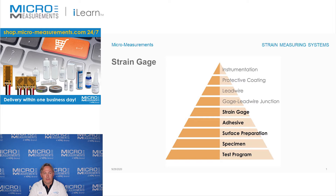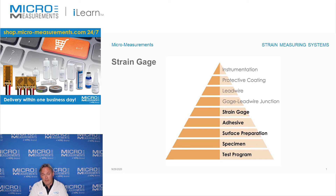Hi, my name is Terrell Peterson and I'm the manager of the applications engineering department here at Micromeasurements. Today I'd like to take you through part of the pyramid approach to selecting strain gauges. Tom Rummage in a previous video had gone through some of the planning stages of the test program, the specimen, surface preparation, and then selecting the adhesive. Today I'd like to take you through selecting the strain gauge and the type of things you need to think about when selecting a strain gauge for your project.